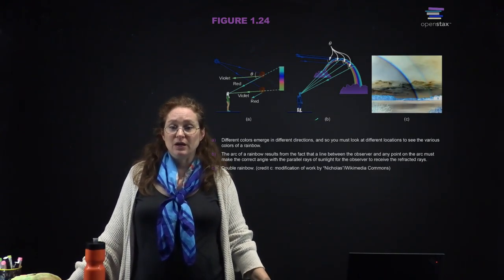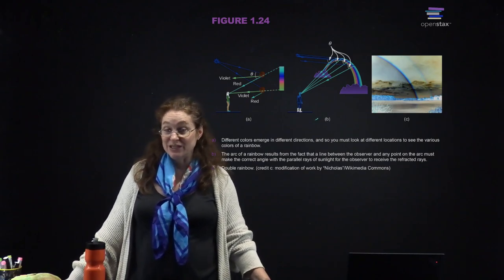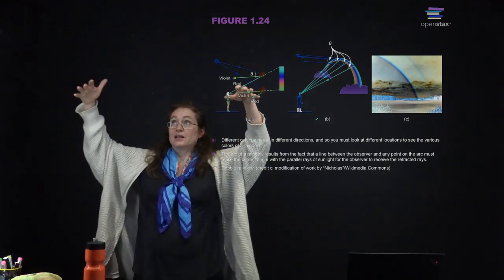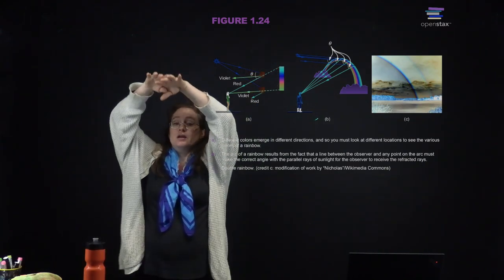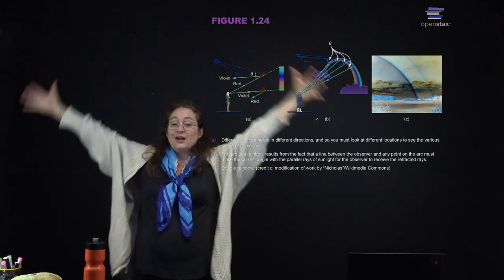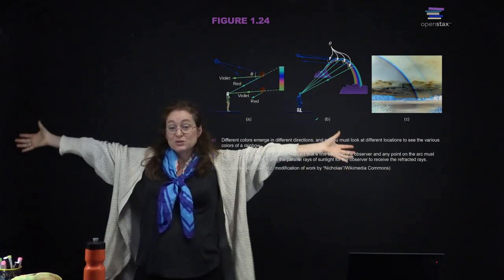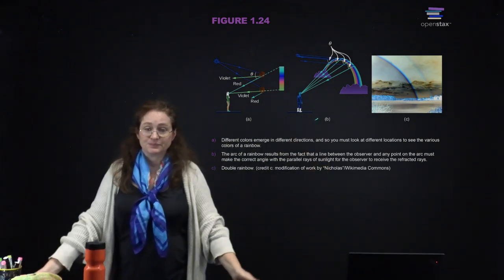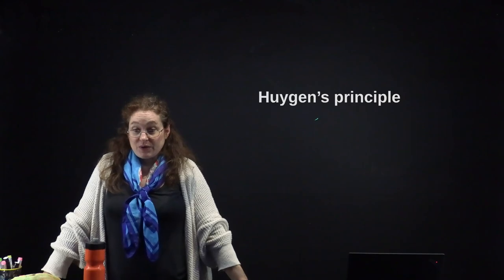Because the different colors emerge in different directions, you have to look in different locations to see a rainbow. If you are standing looking up at the sky, you'll see one angle where you see all of the blue light, and a different angle where you see all of the red light.